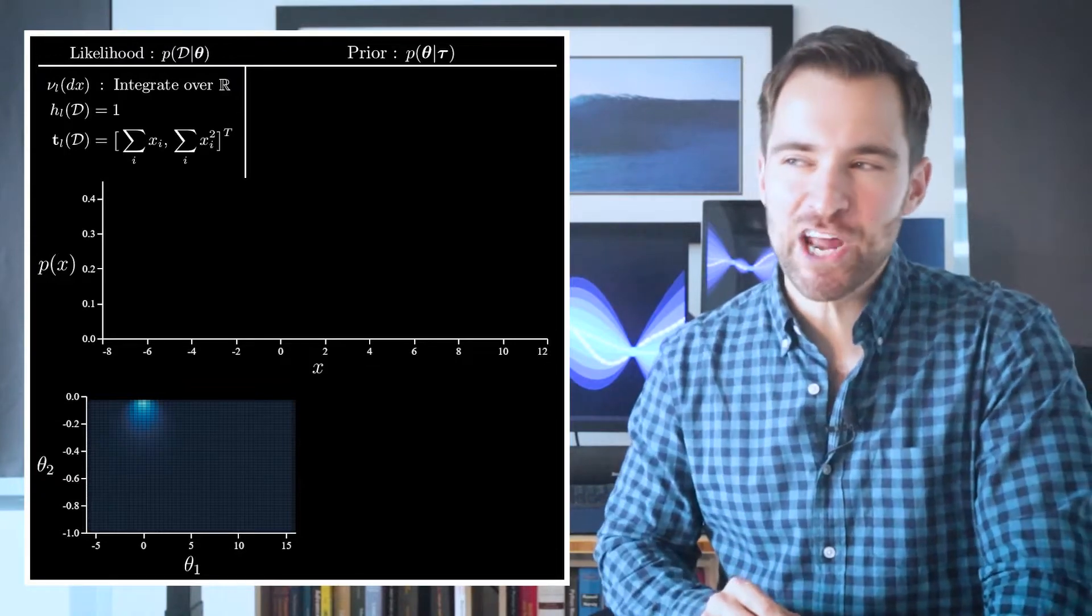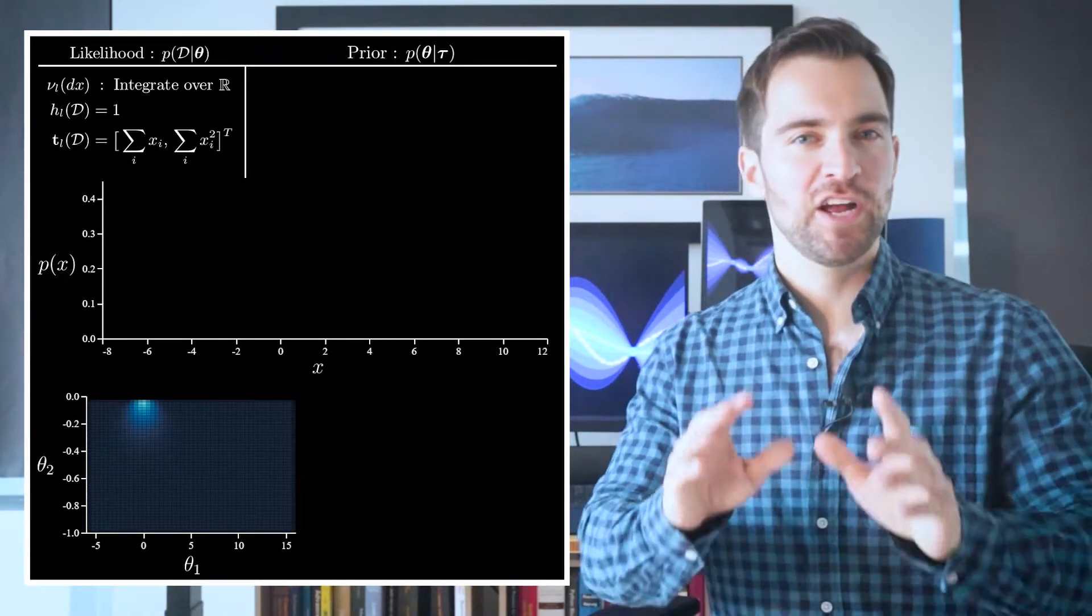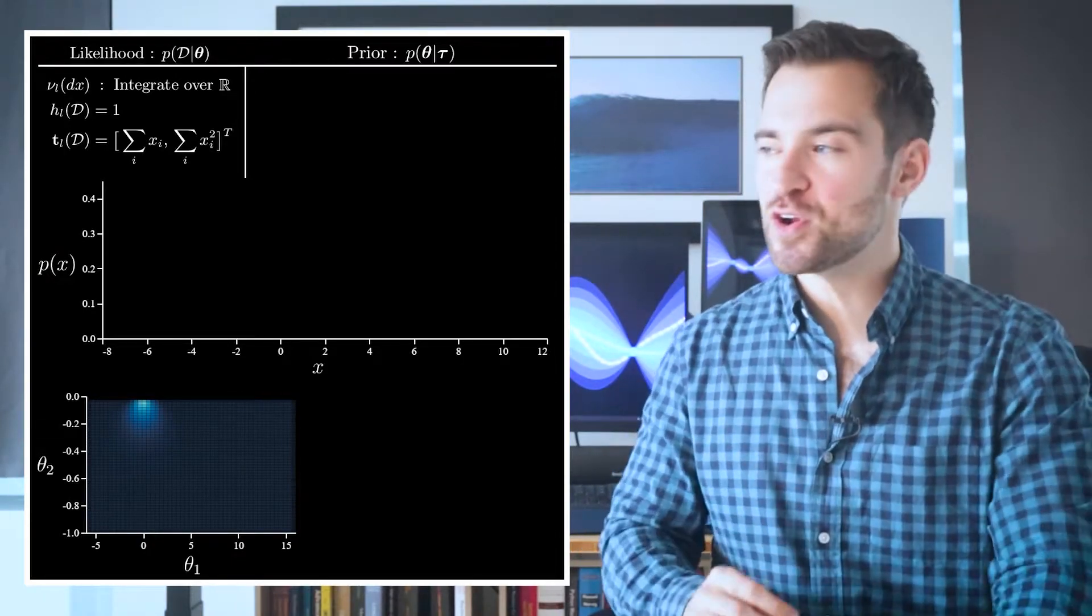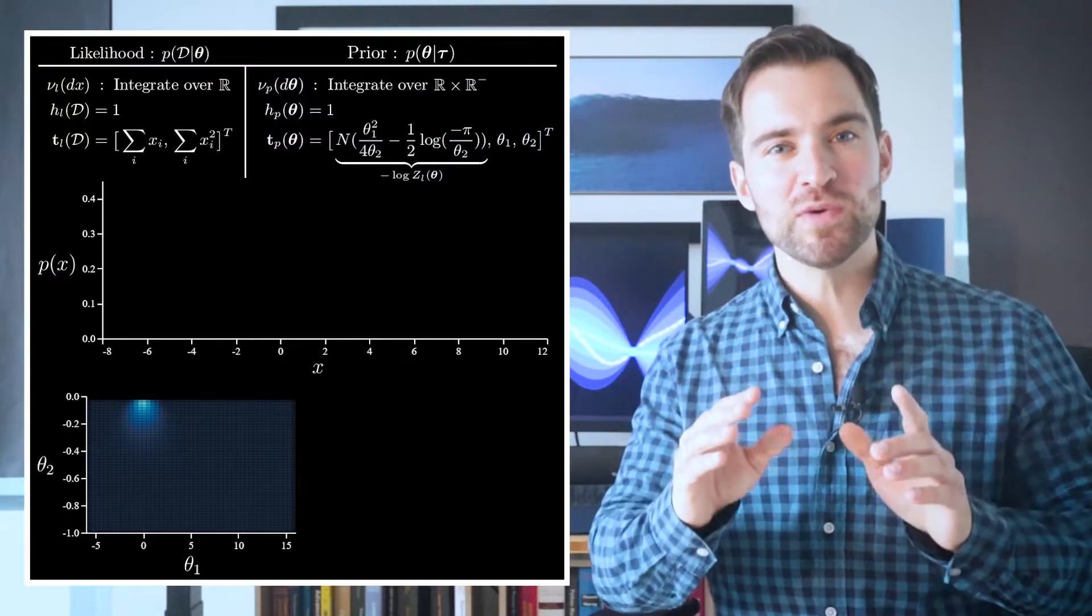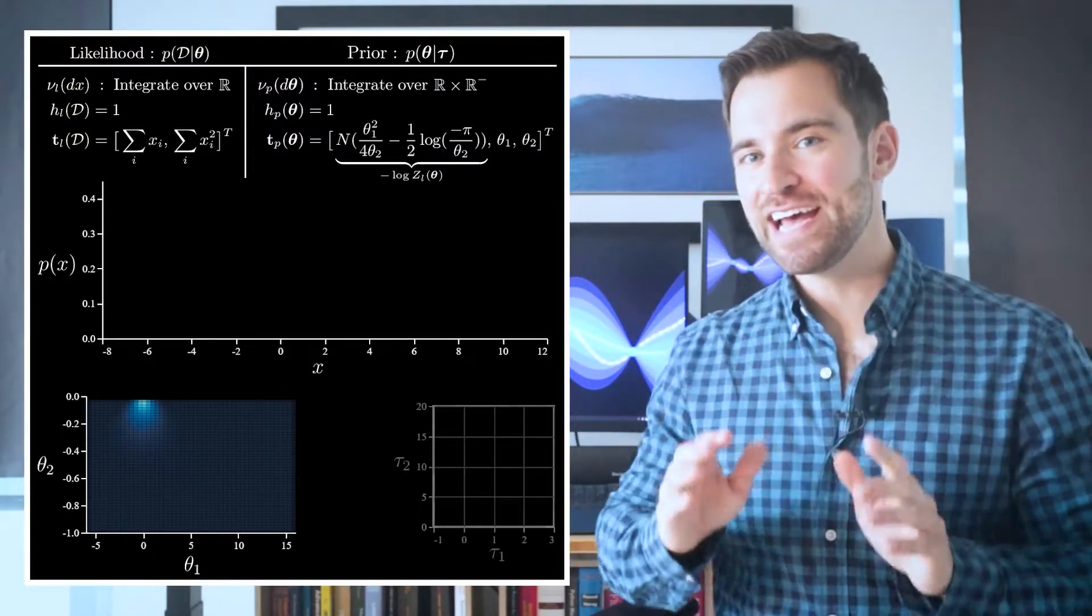But the question is, how do we determine a distribution like this that works as a conjugate prior? From earlier, we know our choices are restricted. It turns out it's fair to go with these, which require we specify a hyperparameter vector τ, which has length 3.